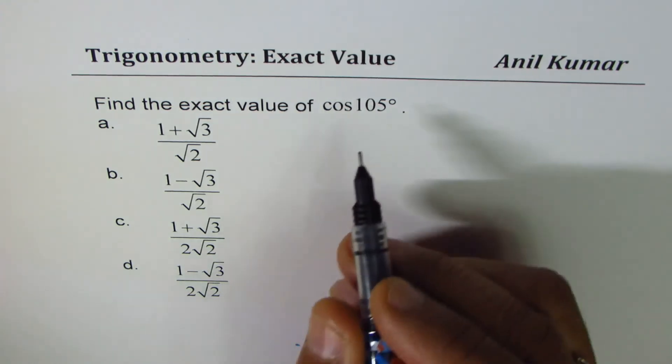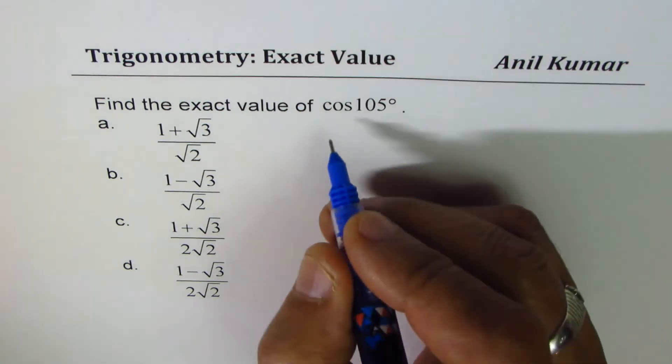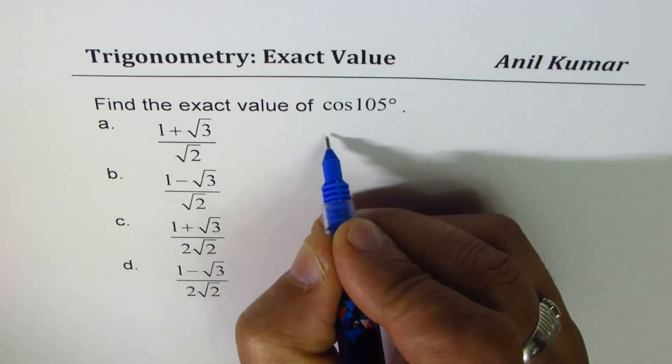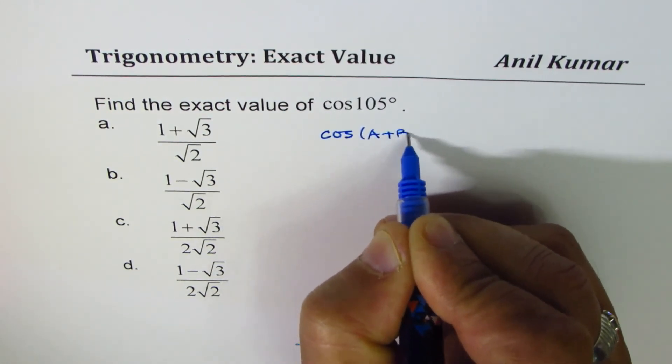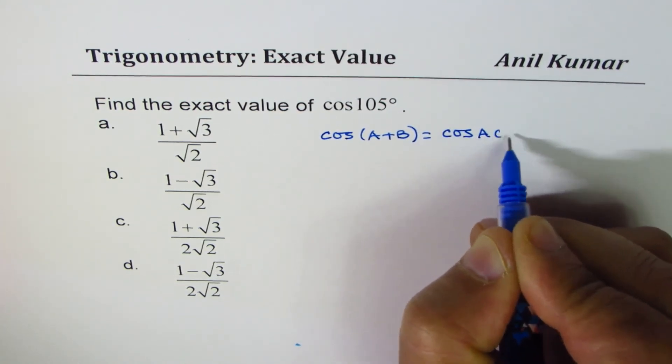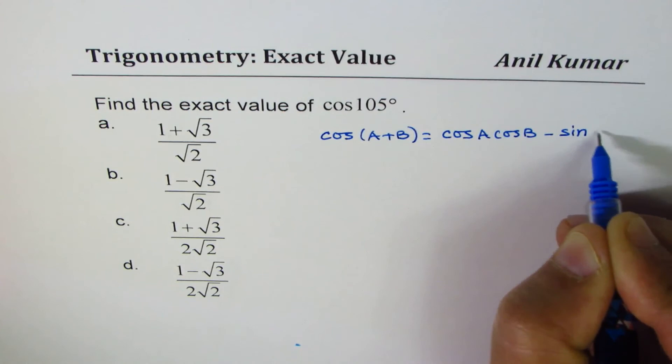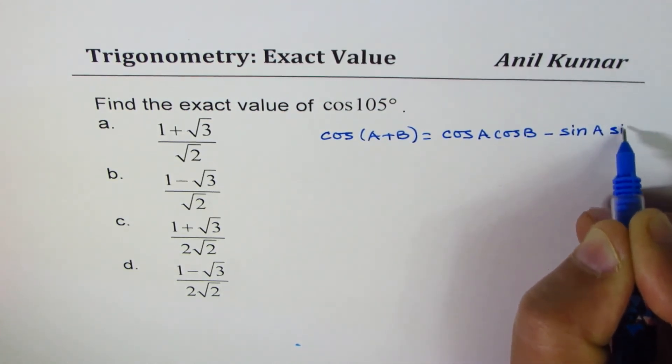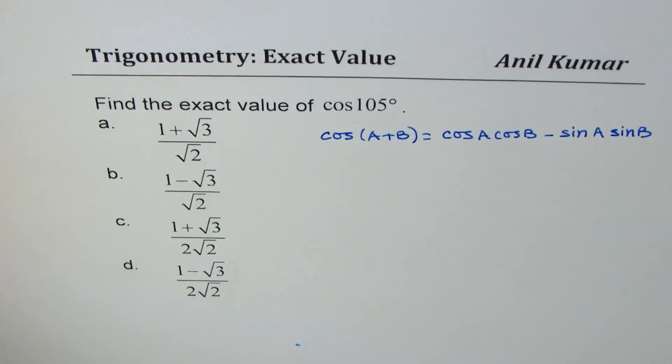One formula which I am going to use here is the compound angle formula, which is cos(A + B) equal to cos A cos B minus sin A sin B. This formula can help us solve the given question. You can pause the video, answer the question, and then look into my suggestions.